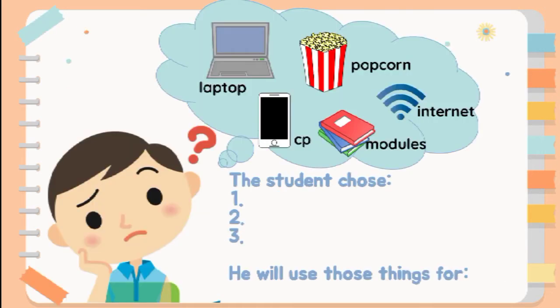The student in the illustration is considering five different options. What did he pick out of the five options? What do you think he will do with those things? Comment down your answer!